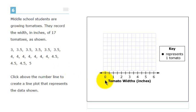So there was one tomato that was three inches wide. The student would go to the number line, find three, click in the cell right above three.